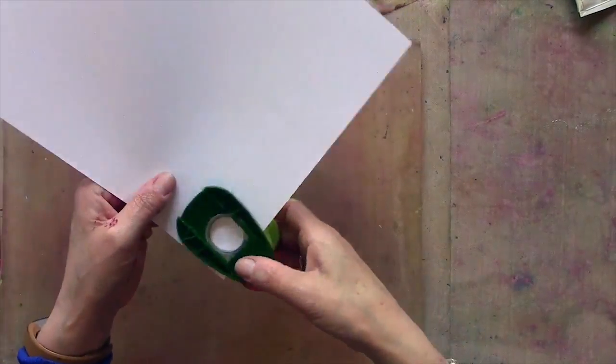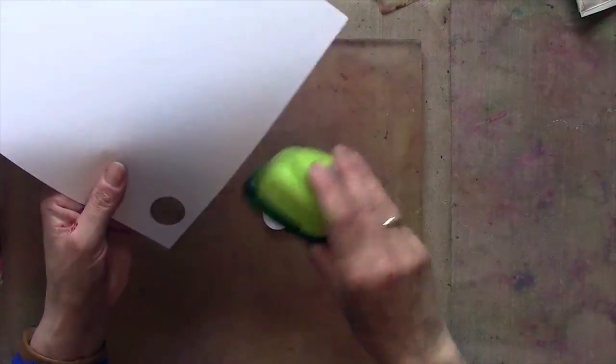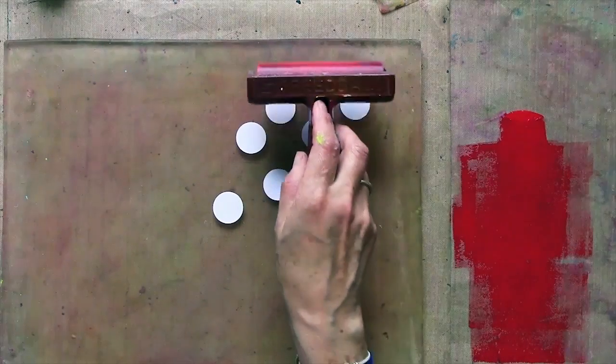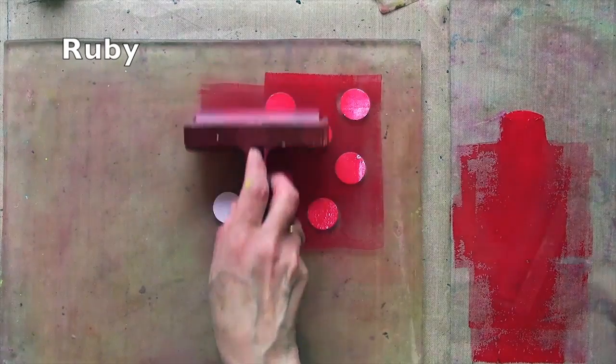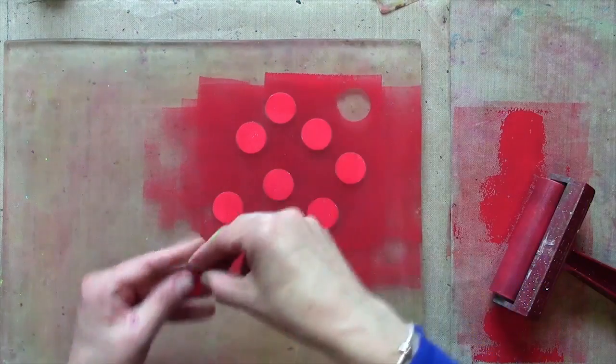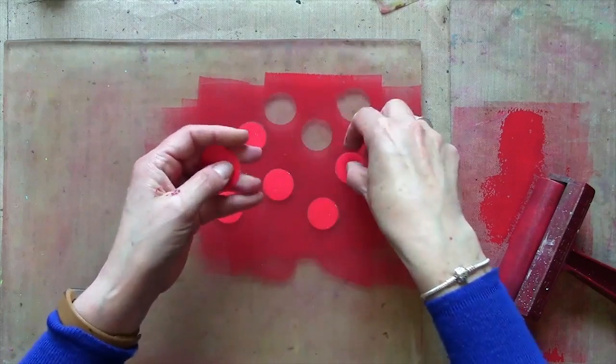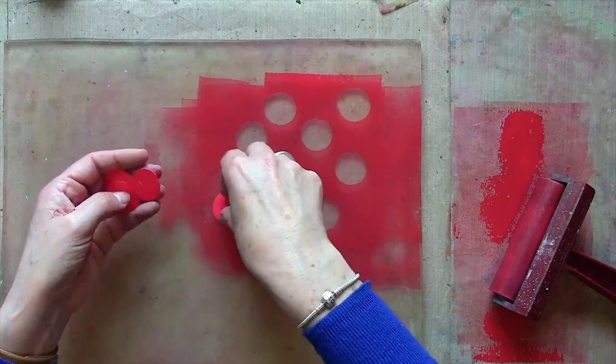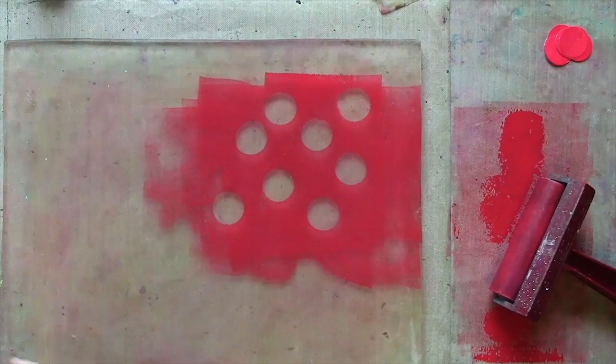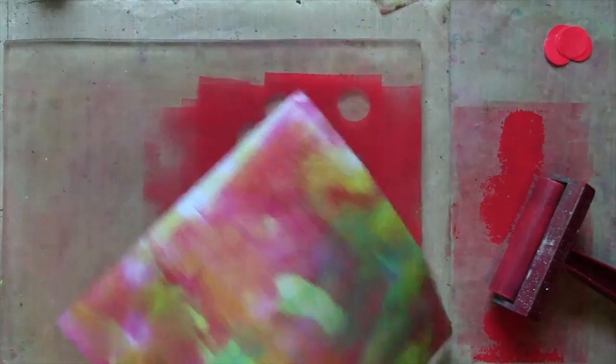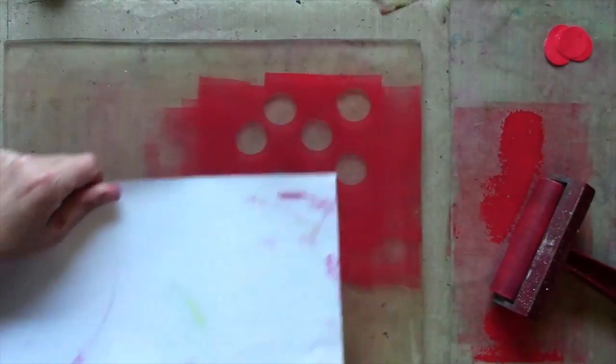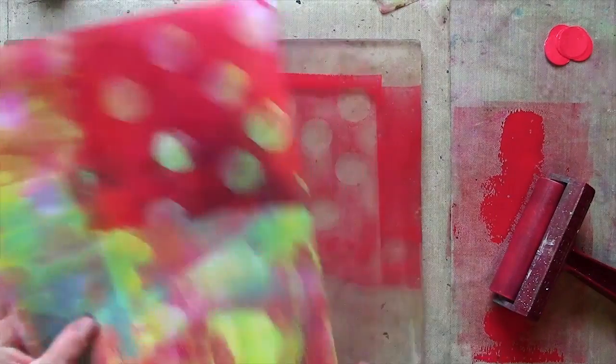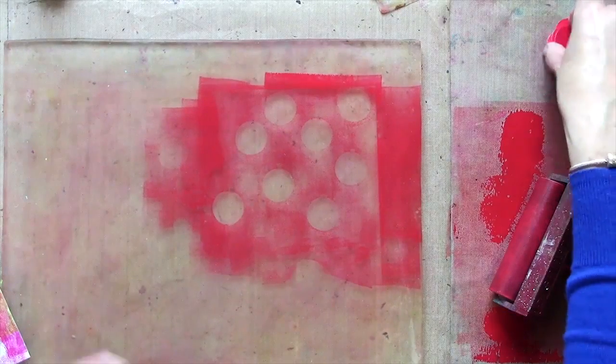Before I add my next color I'm going to just cut some circles. I'm going to use these as masks. Now I'm just going to take these off. You can see that's left me with a design and I'm going to just focus that in the corner. So I won't press the whole thing down. You can see I've got some quite strong circle designs there. I'm going to repeat that in the other corner.